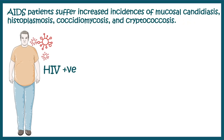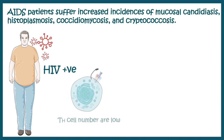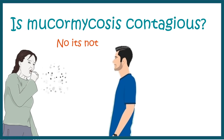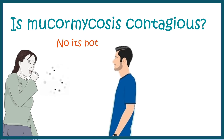For example, AIDS patients have a very low count of TH helper cells, which is why they are more prone to fungal infection. This tells us that TH helper cells are really important to combat fungal infection. If you want to learn the detailed procedure by which our body fights back these fungal infections, you can click on the i button. Now, the biggest question is: is mucormycosis contagious like COVID-19? The answer is no — it's not contagious, so you are not spreading it to nearby individuals.